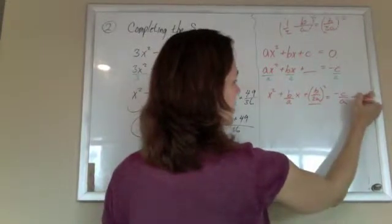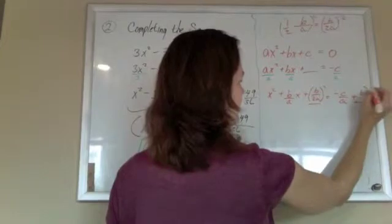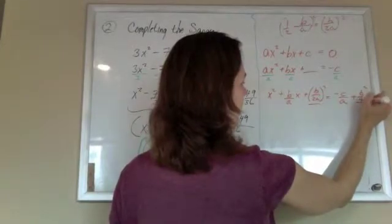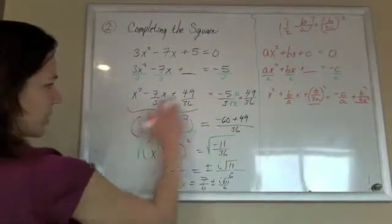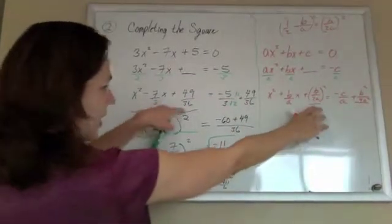And on this side I'll multiply it out, that's b squared over 4a squared. So we're doing the same exact thing, you can parallel this side to that side, there's me adding half and square.